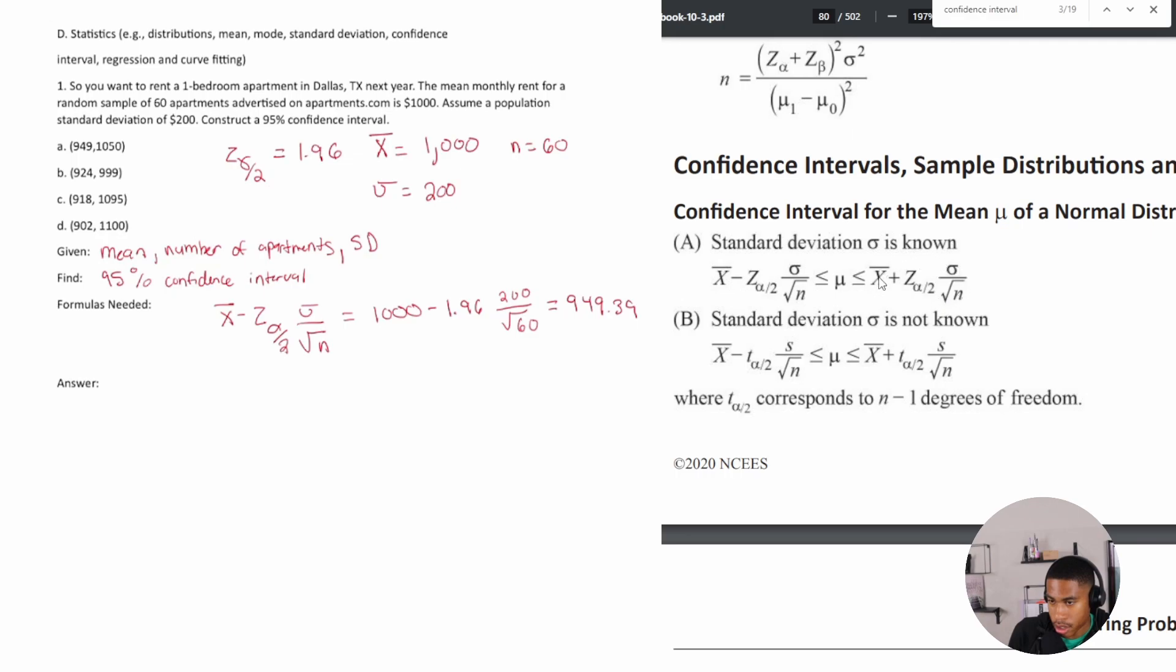Since we know our standard deviation, it's going to be the same thing but it's going to be plus. So x bar plus z alpha divided by 2 times standard deviation over the square root of n. And that's going to equal 1000 plus 1.96 times 200 divided by the square root of 60. And that is going to give us 1050.61. Our answer is going to be A.